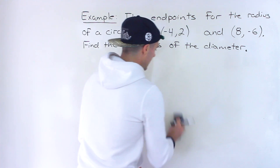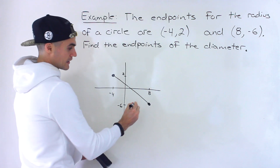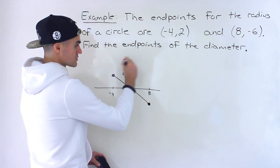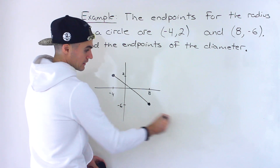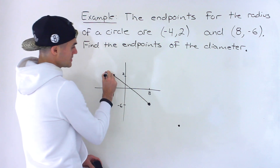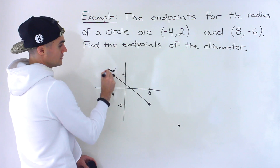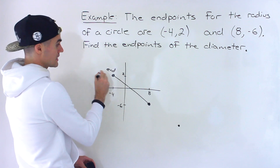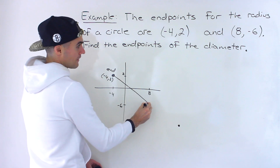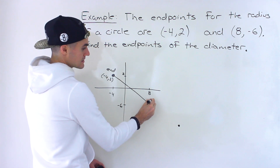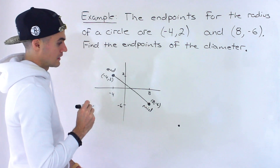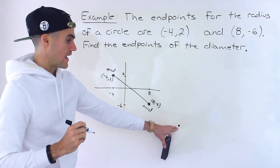Let's first do the case where this point is the center of the circle — where the circle looks like that and the other endpoint of the diameter is out there. In that case, negative 4 and 2 is the endpoint, 8 and negative 6 is the midpoint, and we have to solve for the other endpoint.